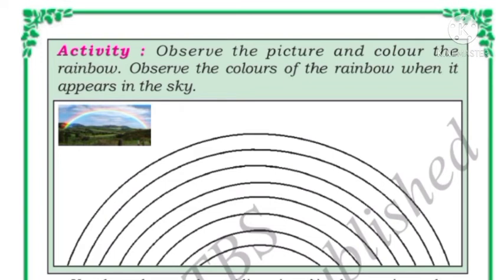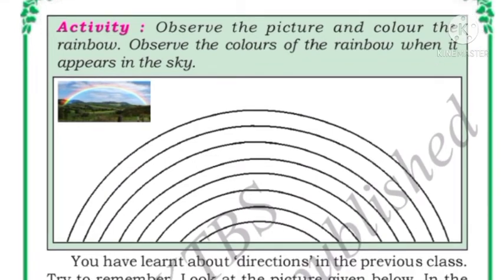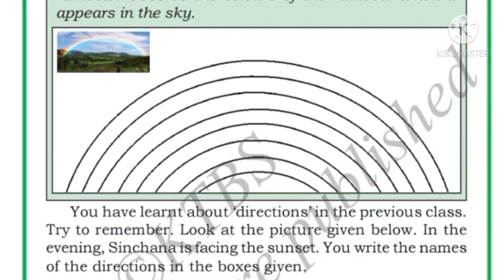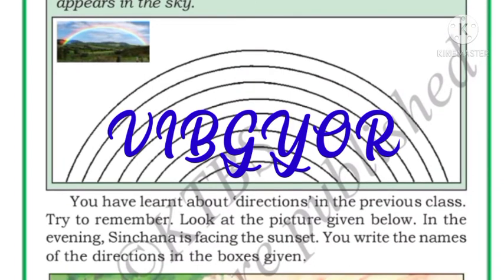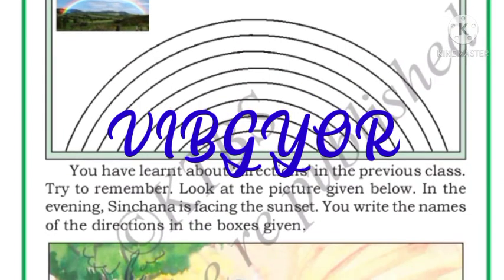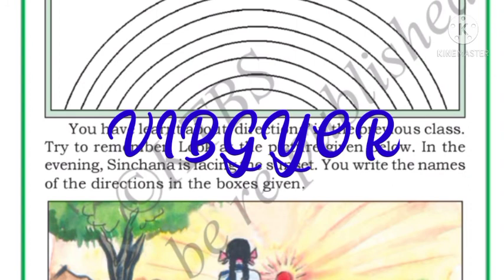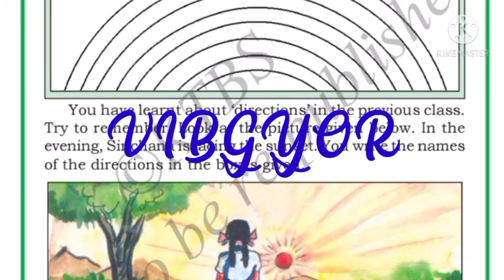Activity: Observe the picture and color the rainbow. You know the colors of the rainbow — remember VIBGYOR: V for Violet, I for Indigo, B for Blue, G for Green, Y for Yellow, O for Orange, and R for Red. Color the rainbow using these colors.